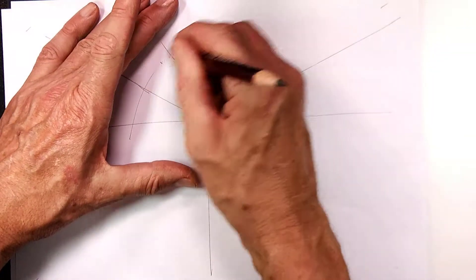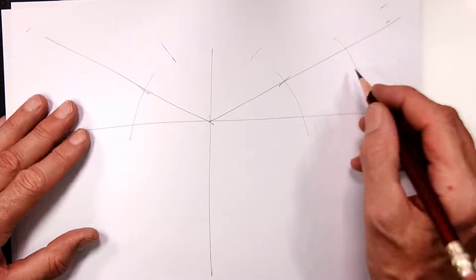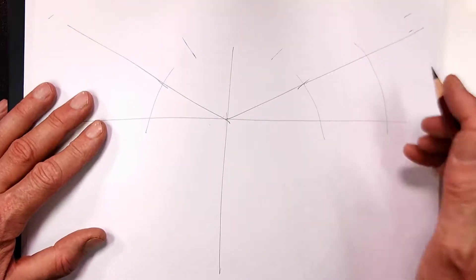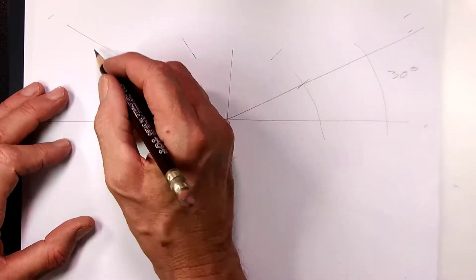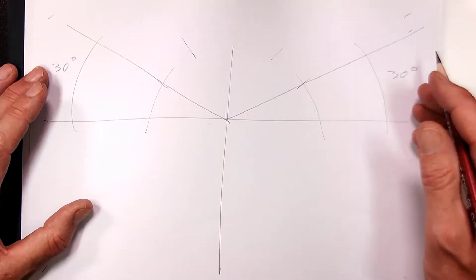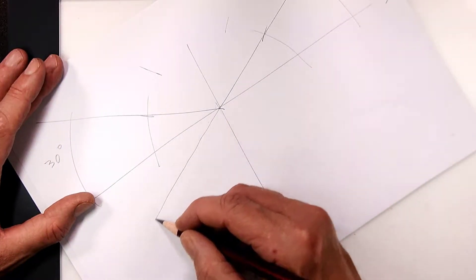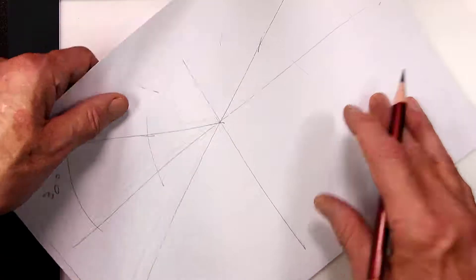All right, we don't need these lines anymore. Now this then is an angle of 30 degrees. It is important that you keep this angle of 30 degrees and that it is not 45 degrees. Then what I want you to do is to continue these lines like this.